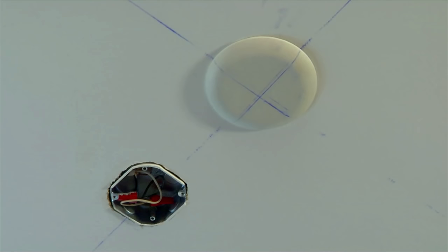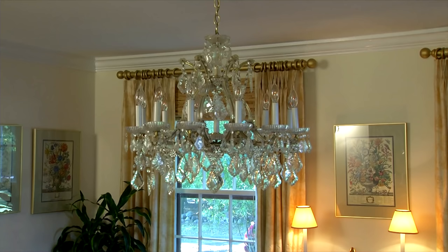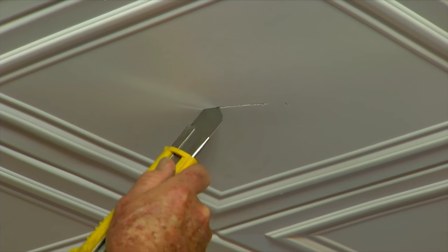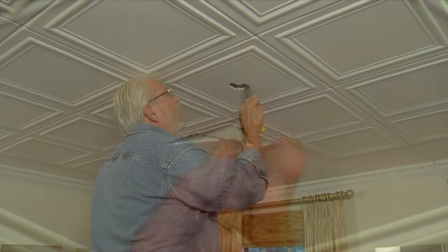Cutting out for electrical boxes can be easily done after the tiles are installed. Before taking the chandelier down, I made sure to turn off the power at the circuit breaker panel. Now using a utility knife, I can simply insert the blade, carefully cut my way around the edge of the box, and then use the box as a template.